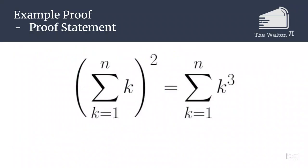Today we are going to show that the sum from k equals 1 to n of k all squared is equal to the sum from 1 to n of k cubed.